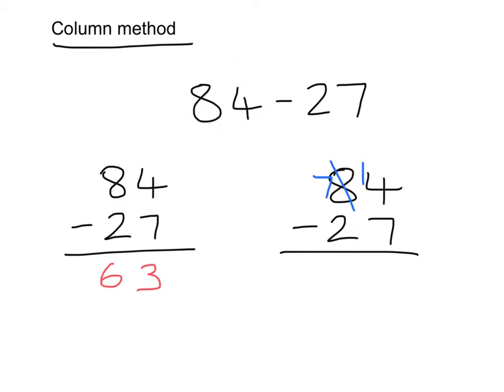Now we do 14 take away 7, which is 7, and then 7 take away 2, which is 5. And that should have been the answer that your calculator gave you when you put this in.